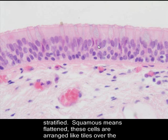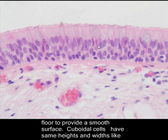Squamous means flattened. These cells are arranged like tiles over the floor to provide a smooth surface. Cuboidal cells have the same height and width, like cubes.